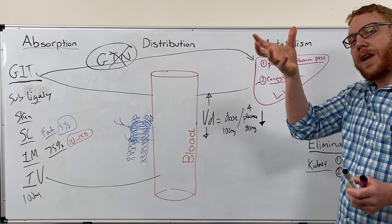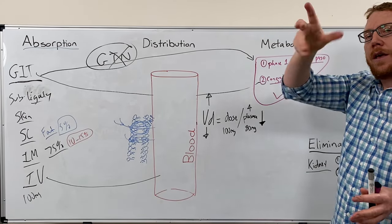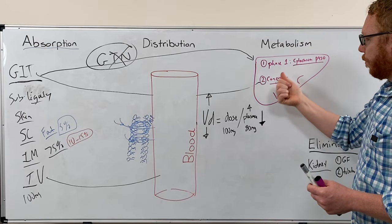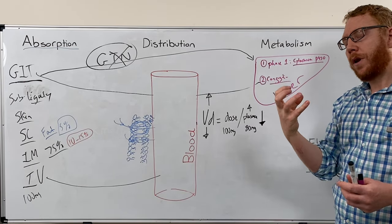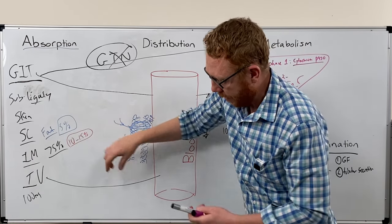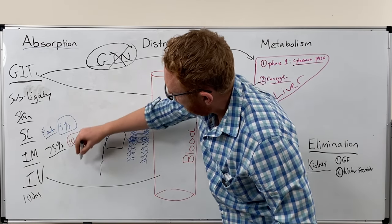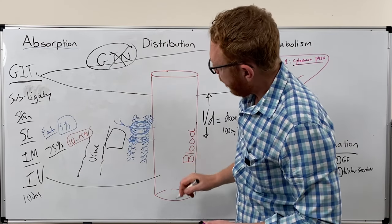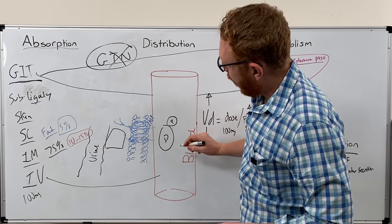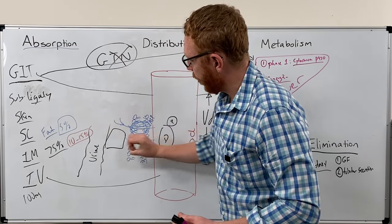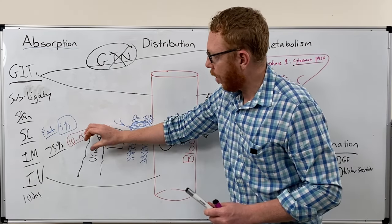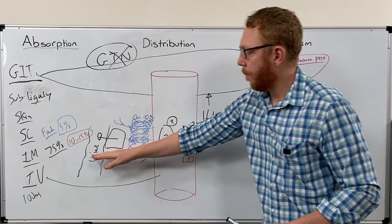Number two is tubular secretion. As blood moves through the PCT into the loop of Henle and into the DCT, blood vessels wrap around the nephron. Once the drug has been conjugated and has a big polar group, it can be secreted from the blood across into the nephron and put into the urine. Through a facilitated transporter, the drug is pushed through into the urine — this is tubular secretion. Once it's in the urine, it can't get back because it's too big and has no carrier, so we can urinate it out.